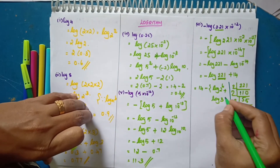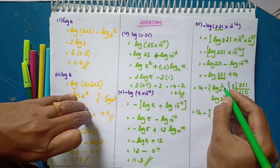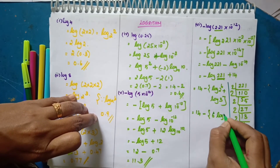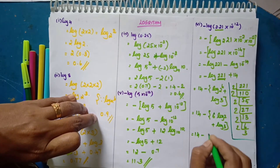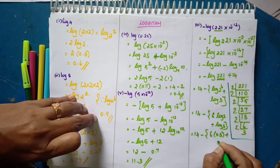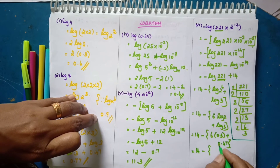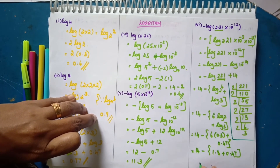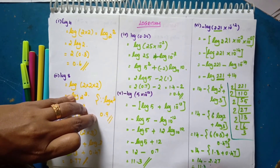Log 2 power 6 plus log 3. Next step: 14 minus — using the log of a power b formula — 6 into log 2 plus log 3. So 14 minus 6 into 0.3 plus log 3 value 0.47. Next: 14 minus 1.8 plus 0.47. That equals 14 minus 2.27, which is equal to 11.73. That is the answer.